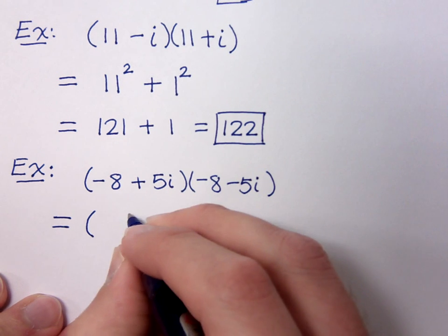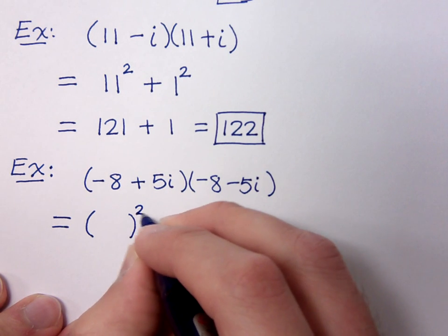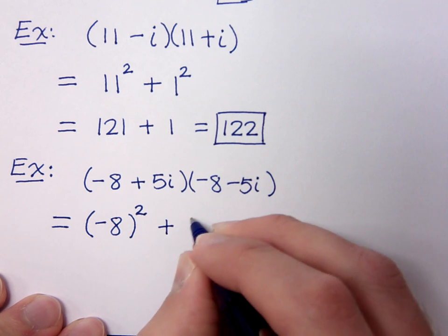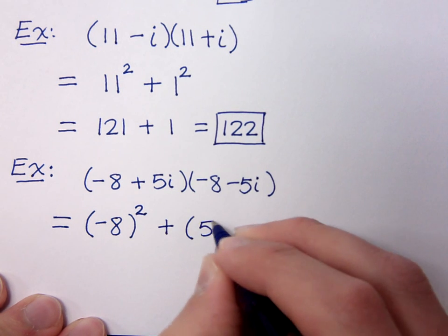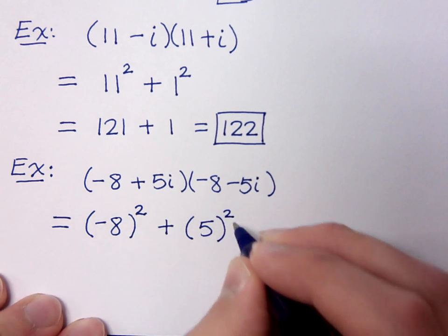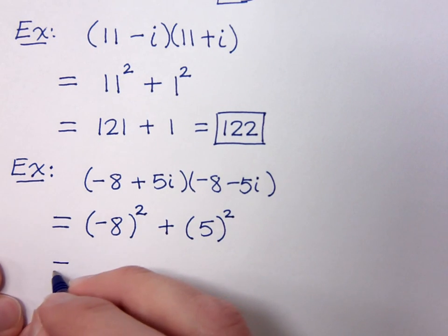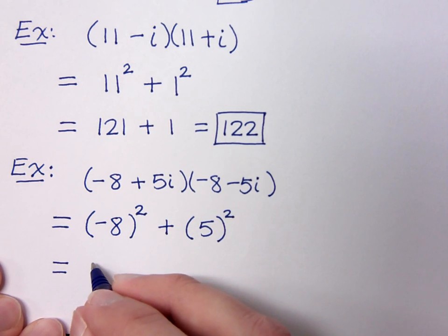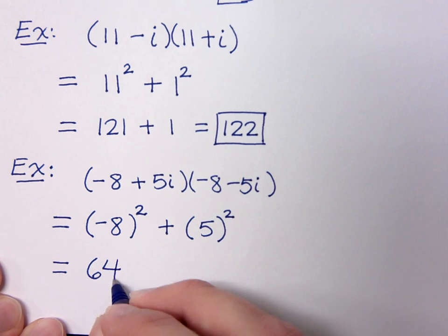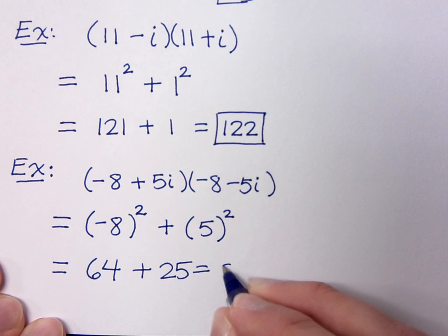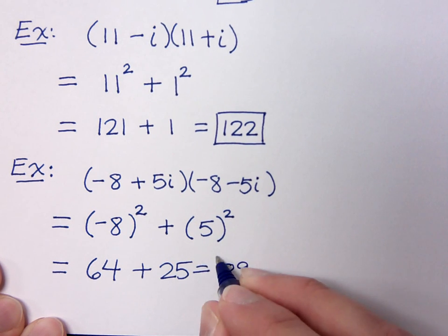With the sum of squares, we want to be a little bit more careful here. This is going to be negative 8 squared plus 5 squared. So we have the sum of squares here, and then we just knock this guy out. So this is a positive 64 and a positive 25, and altogether this gives me 89.